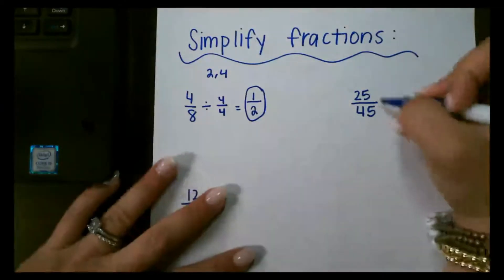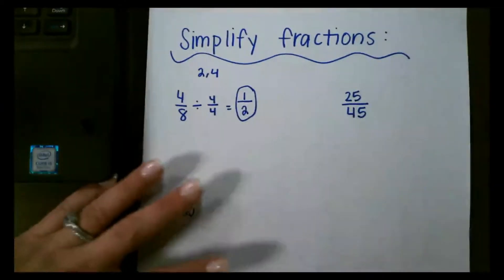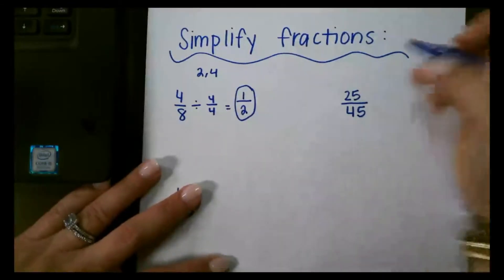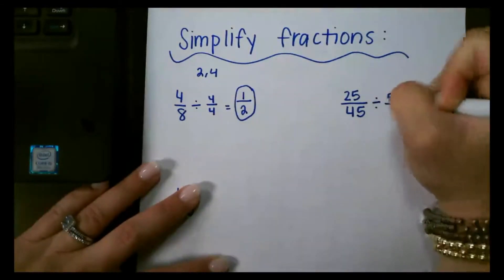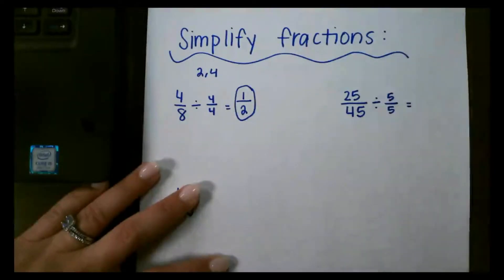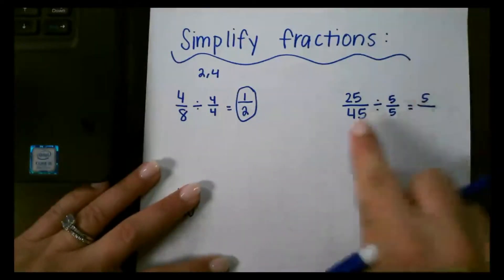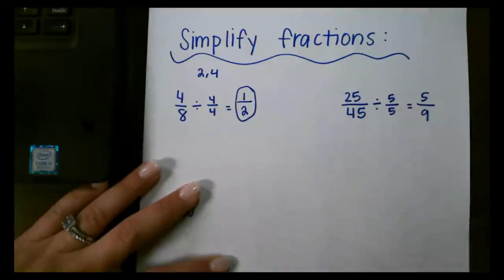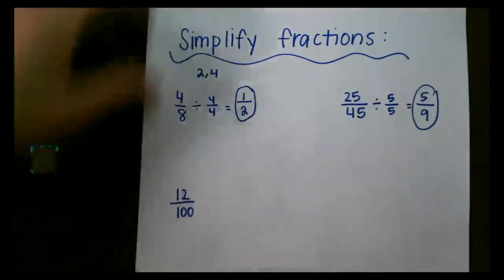For this next one, 25 and 45 — think of a number that can go into both of those. They both end in 5, so let's use 5. 25 divided by 5 is 5, and 45 divided by 5 is 9. Nothing will divide into both of these, so that's our final answer.